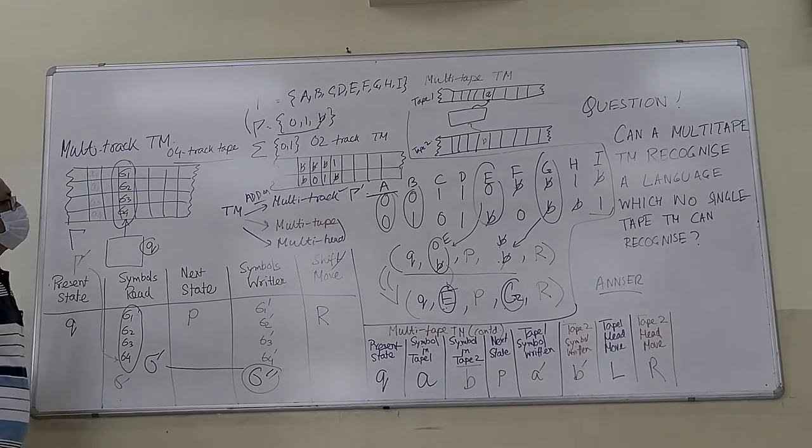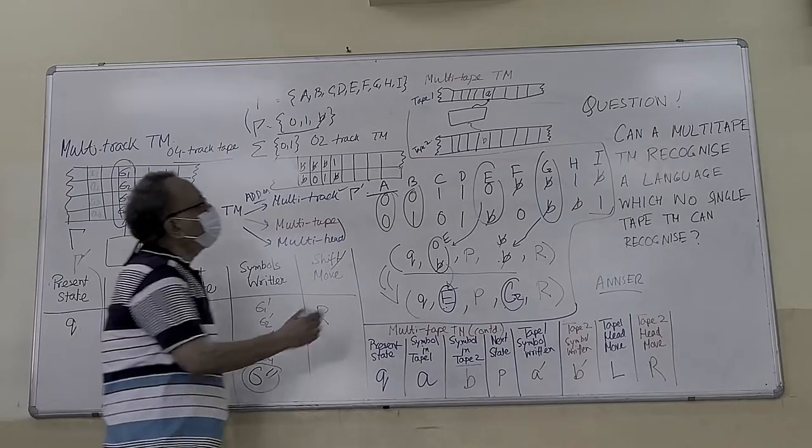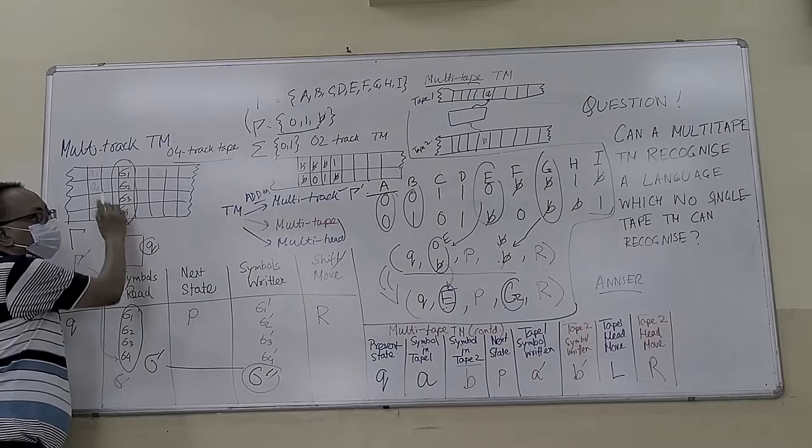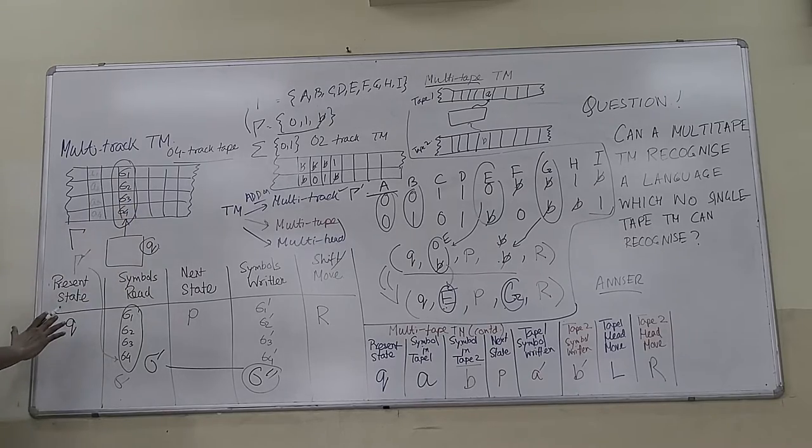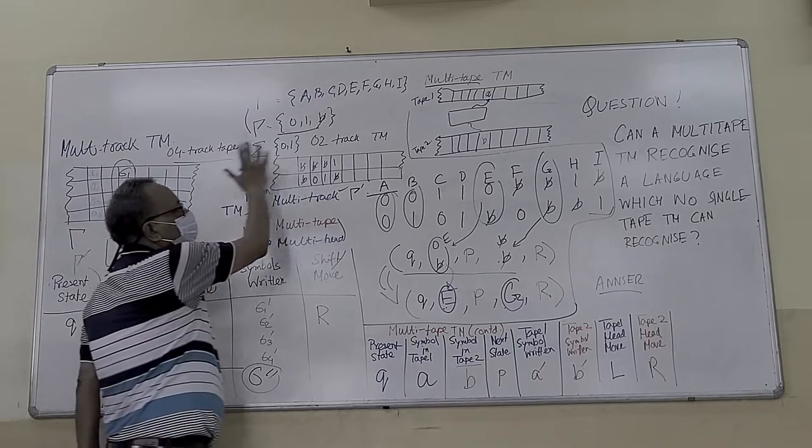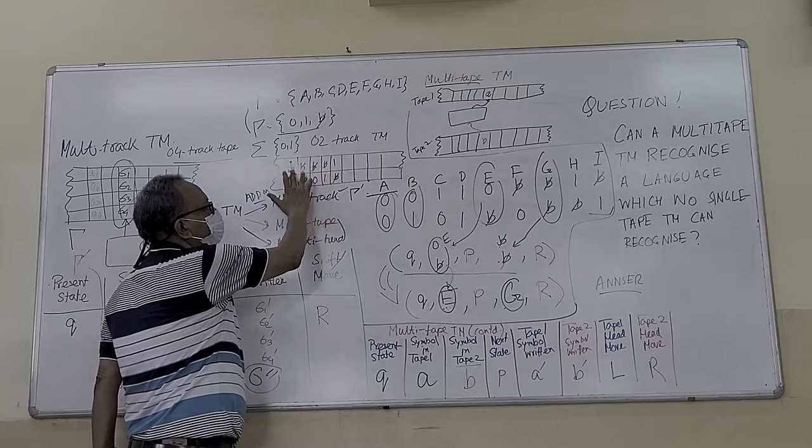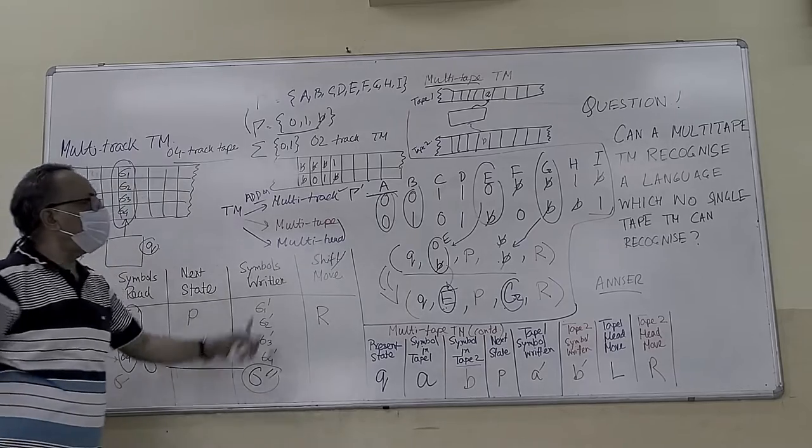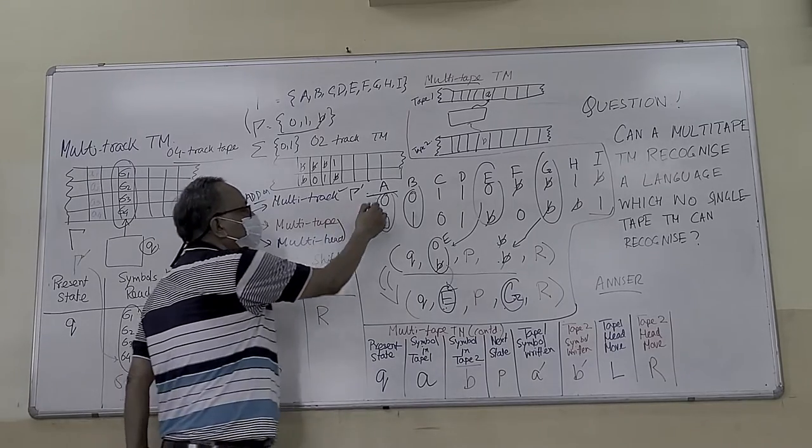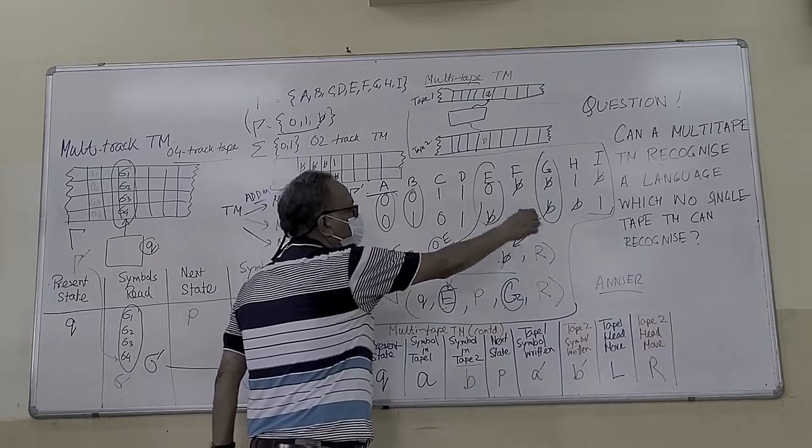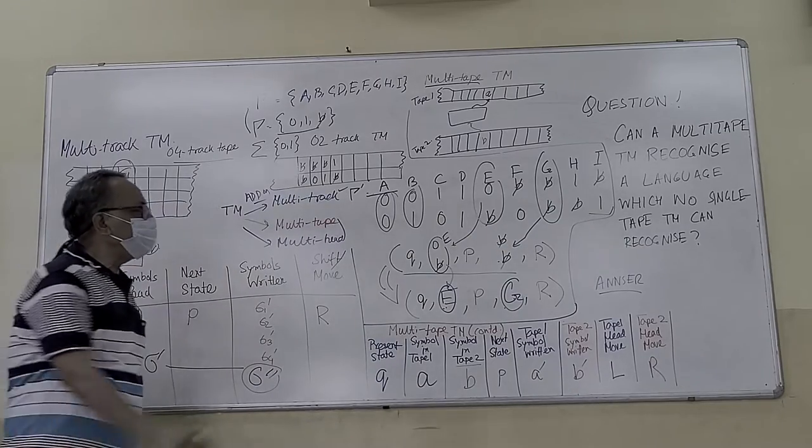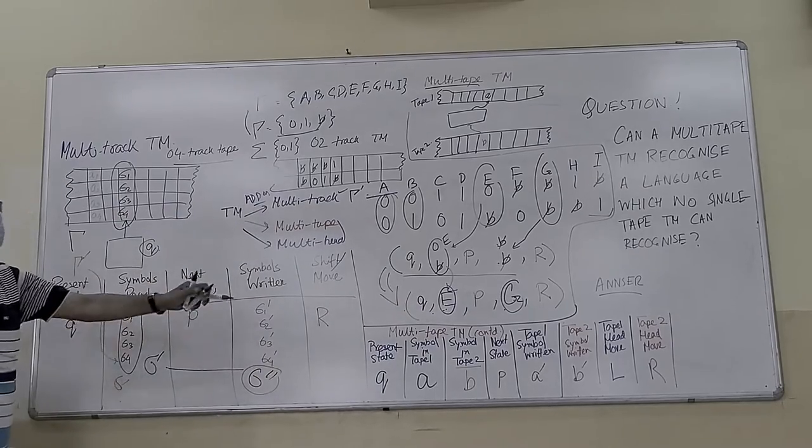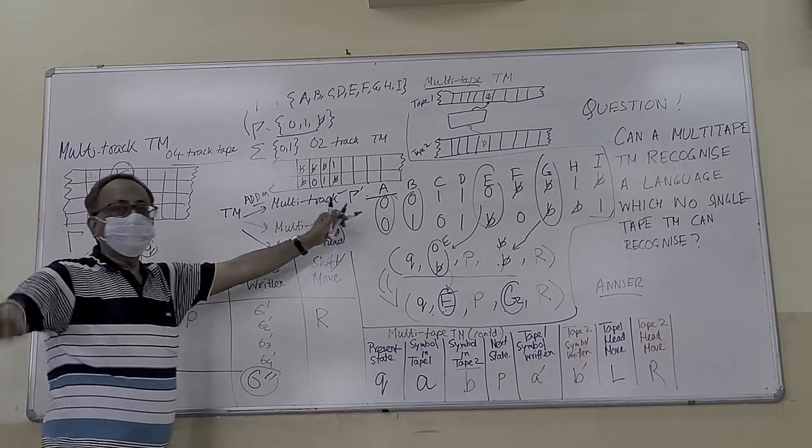Now we go for Turing machine with multi tape. Remember this is multi track. Four tracks we have started. Now for Turing machine with multi tape, we make a different gamma alphabet with A to I, with different combination of 0, 0, 0, 1 and all this. We can see it can be converted to this which is gamma prime. Now here is very difficult. Multi-track and this is now going for multi-tape.